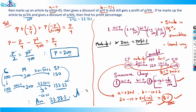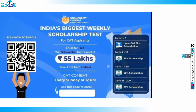To summarize: the key funda to reduce variables in such questions is that the successive change of markup percentage and discount percent results in profit or loss percentage. It could be a loss if the discount is large enough.